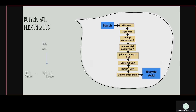Next is butyric acid fermentation — a type of fermentation in which the end product is butyric acid. Glucose is converted into butyric acid and acetic acid. In glucose, six carbons are present; four carbons are present in butyric acid and two carbons in acetic acid, so the six carbons break down into four and two.